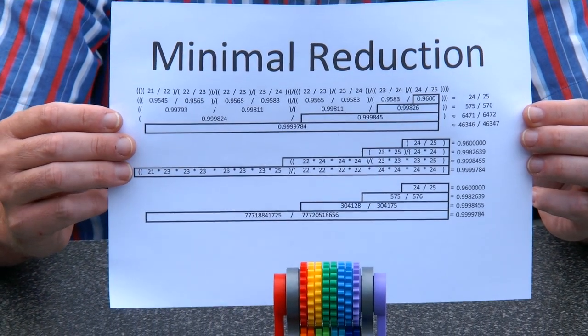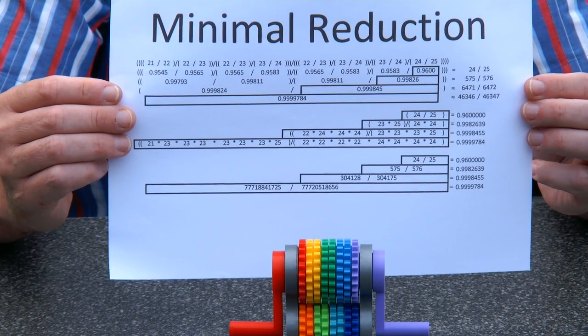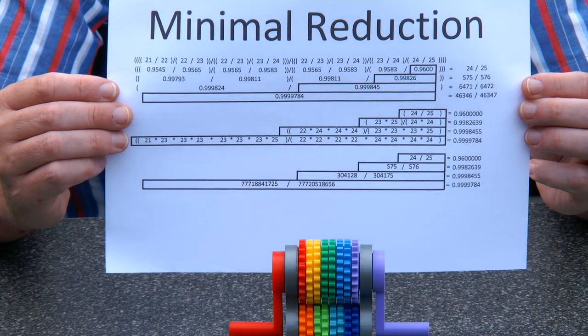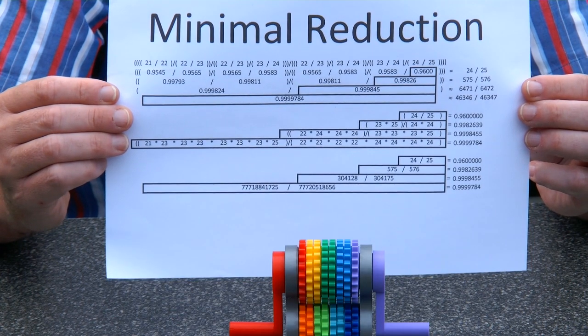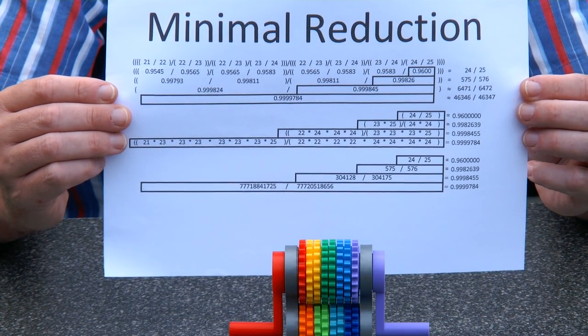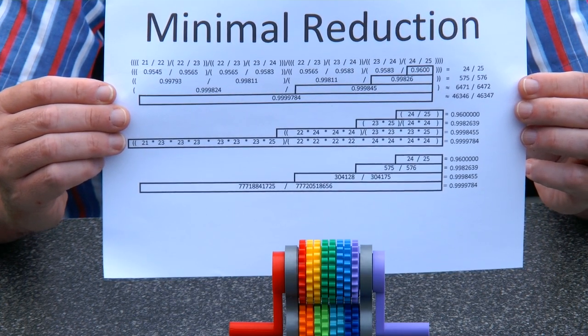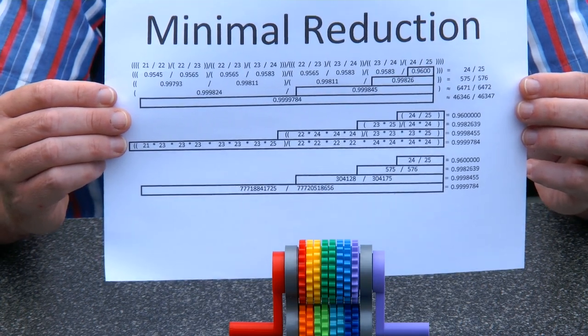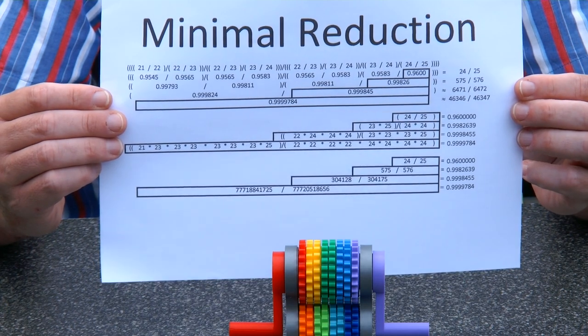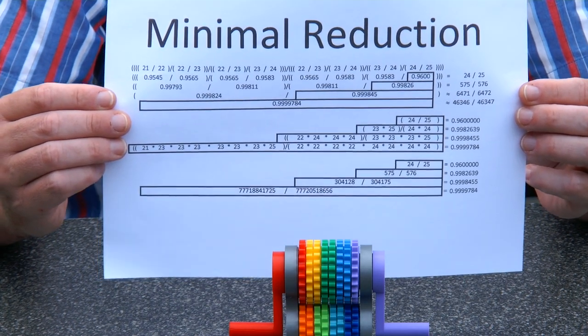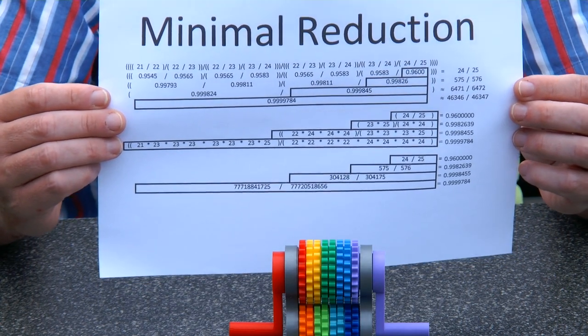Then by making the next stage, you take the first stage and do all the teeth numbers minus 1, so 24 to 23. Then you cascade them, so then you have 25 multiplied by 23 divided by 24 times 24, which is 575 divided by 576, which is already 0.998, etc. So it's a number that is ridiculously close to 1.